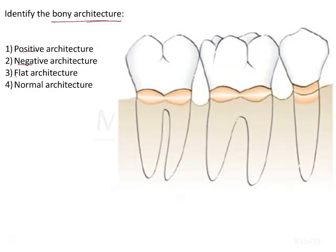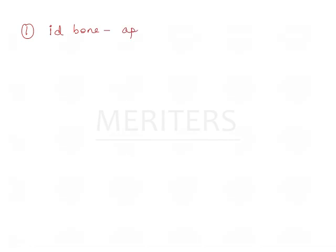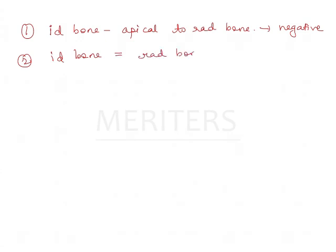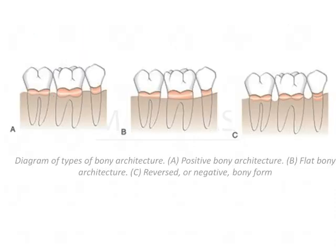We identify bony architecture as positive, negative, flat, or normal. Bony architecture refers to the position of the interdental bone with respect to the radicular bone. If the interdental bone is more apical to the radicular bone, it has negative architecture. If it is at the same level, it is flat architecture. If the interdental bone is more coronal to the radicular bone, it is positive architecture.